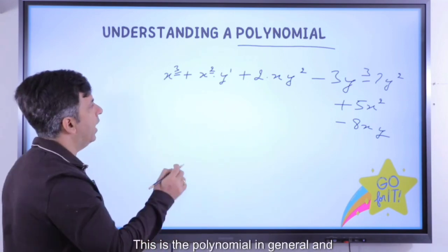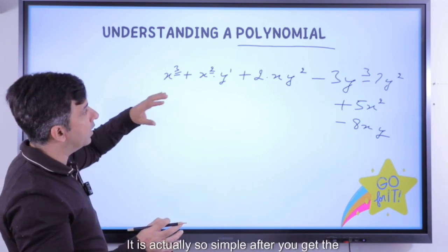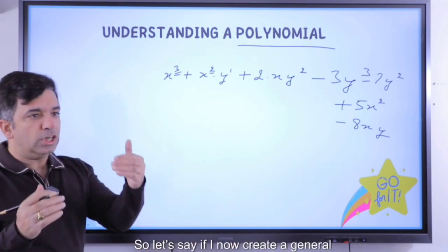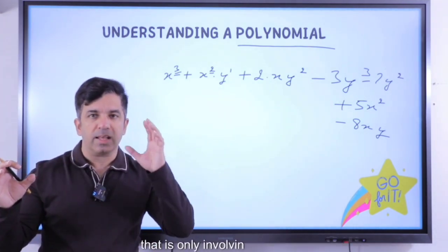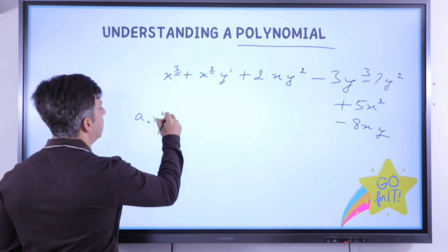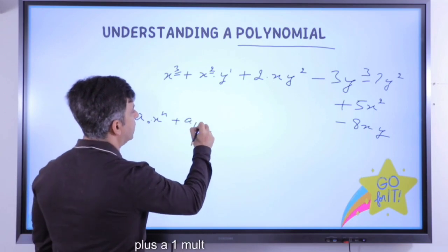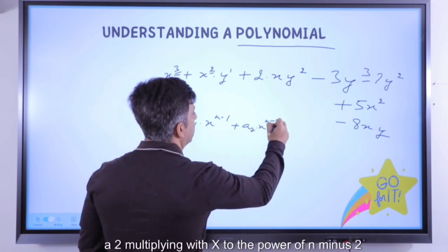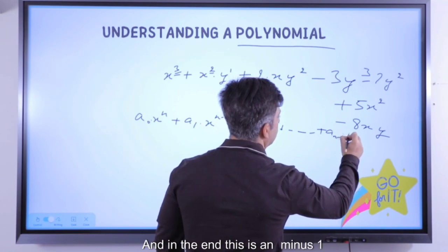You'll start identifying a polynomial in one second — it is so simple once you get the basic feel of it. Let me create a general polynomial in one variable: a₀·xⁿ + a₁·x^(n−1) + a₂·x^(n−2) + ... + aₙ₋₁·x + aₙ, where aₙ is a constant at the end.